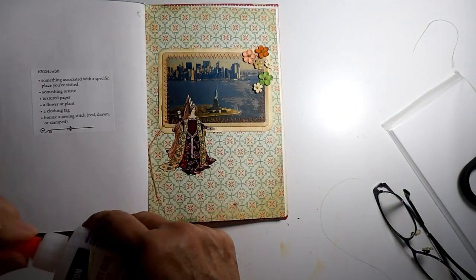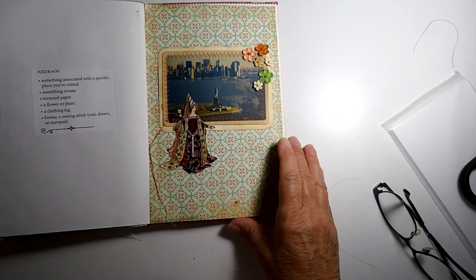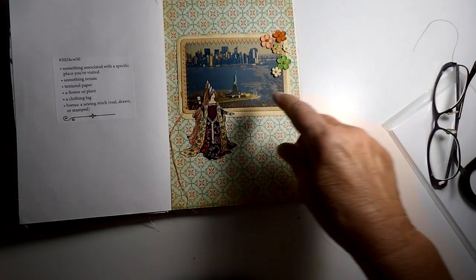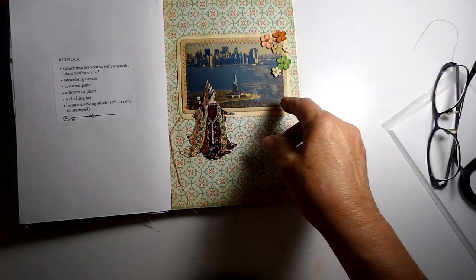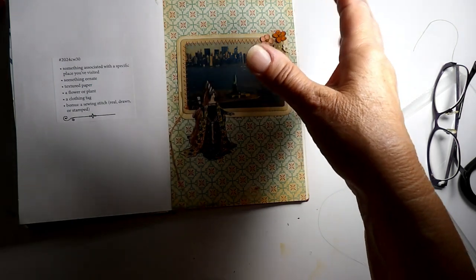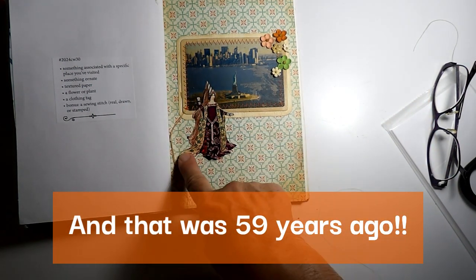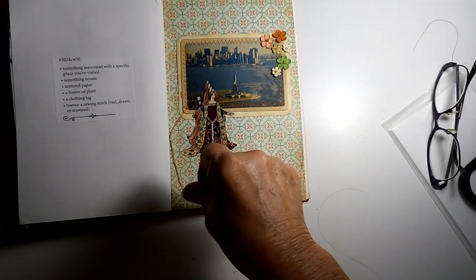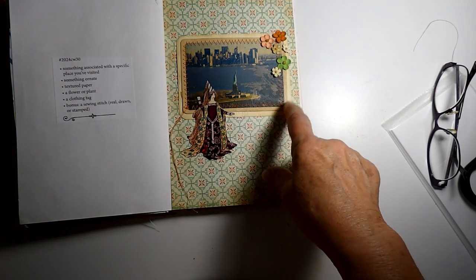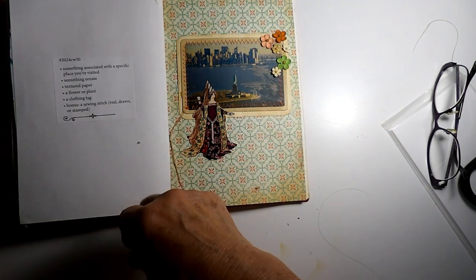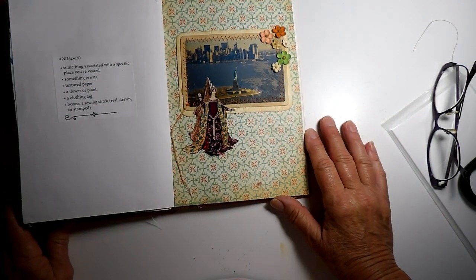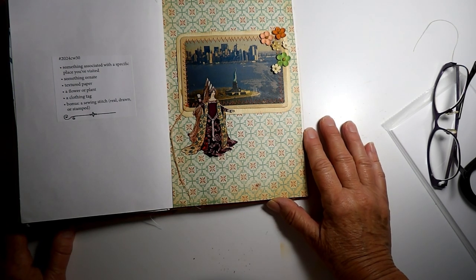So let's make sure we've got everything we need. We have something associated with a specific place, which is the Statue of Liberty. I actually remember climbing up the steps of the Statue of Liberty on a field trip when I was like six years old. Something ornate is this lady's dress and apparel. Textured paper is the photo mat. Flowers. I did not do the clothing tag, so I used the bonus stitching. And I think this is one of my favorites, if not my favorite collage that I've done so far.